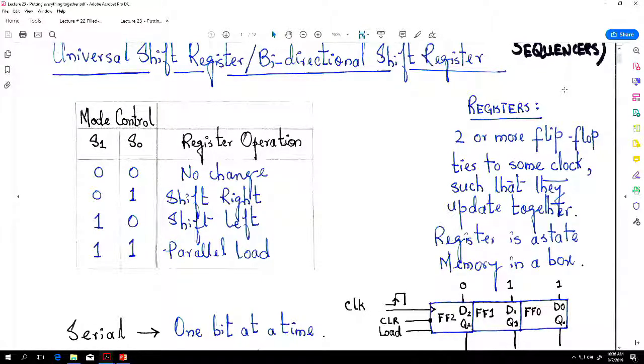We know because we are using muxes, for four mode controls we need two selector switches, S1 and S0, because that is when we will have four different combinations.